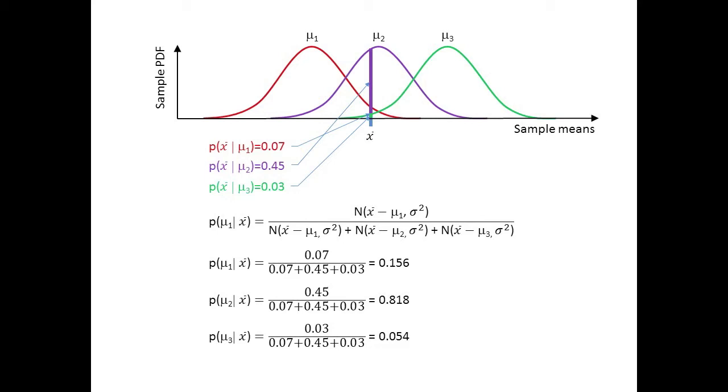It tells us that there is nearly an 82% chance that the sample came from the population with the mean of μ2, but the chances are only about 5% that it came from the population with the mean μ3.